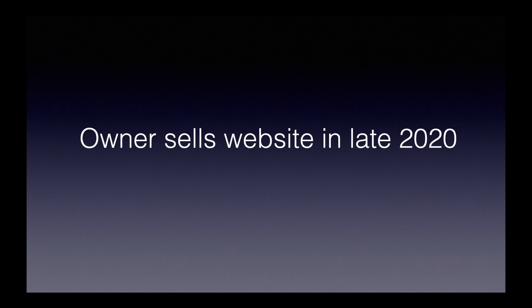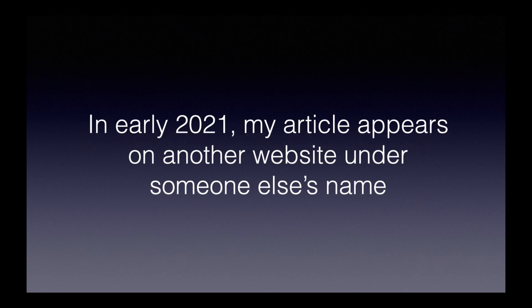I wrote to him asking him to please restore the link to my website or to remove the article from his website, but I never heard back from him. Then, a few months later, I was researching something about blog post introductions and my article appeared in the search results — only this time I was no longer the author. The article was now being claimed as the work of someone else, not Person A, but someone else who I will call Person B. Not only that, the original URL of my article now redirected to another website, which I will call Website B. What follows are the steps I took to have the infringing material removed.